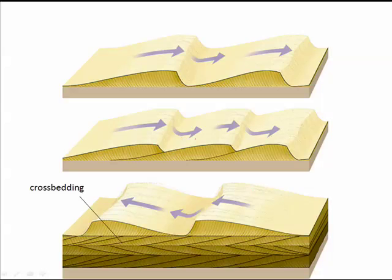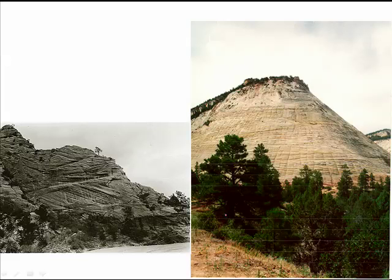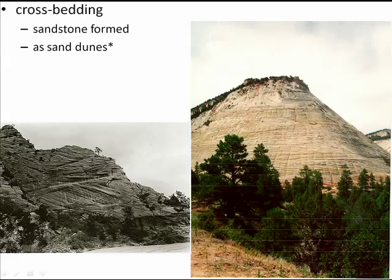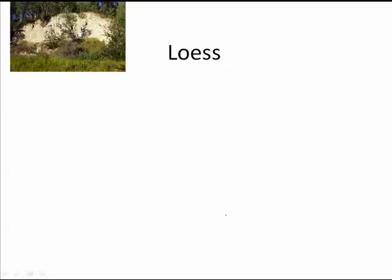Since sand dunes create slopes at an angle along the leeward side, you get horizontal layers with angled layers — this is called cross bedding. Cross bedding is one way of knowing that sandstone must have formed at a sand dune. Some of the best examples of cross bedding can be found at Zion National Park.